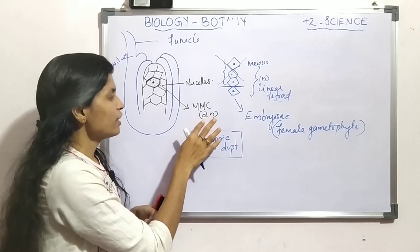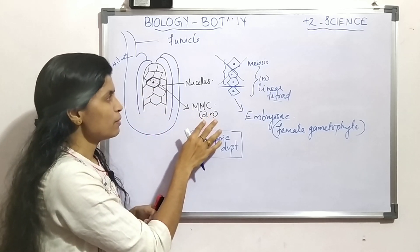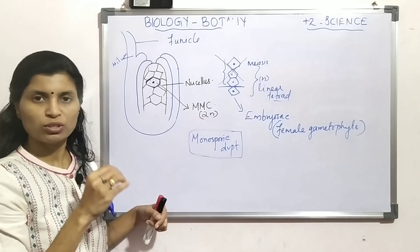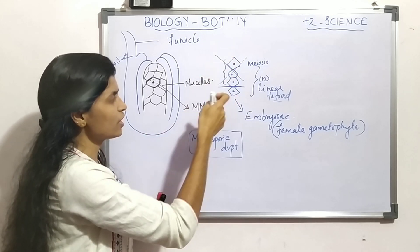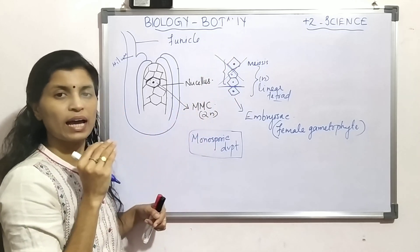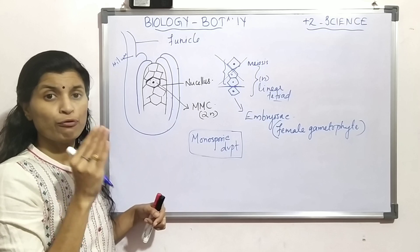Then again, the MMC undergoes meiosis, resulting in haploid daughter cells.